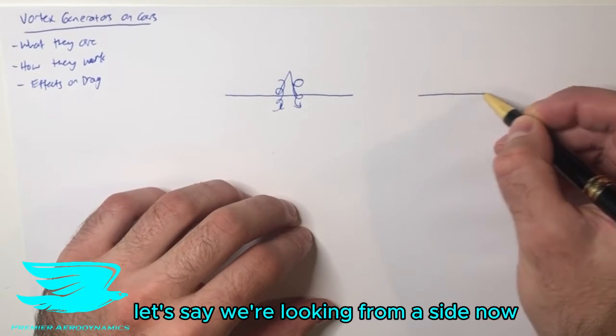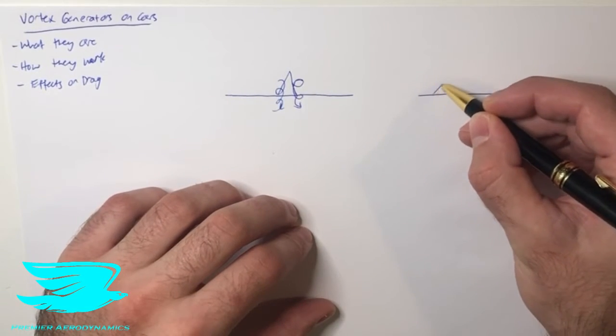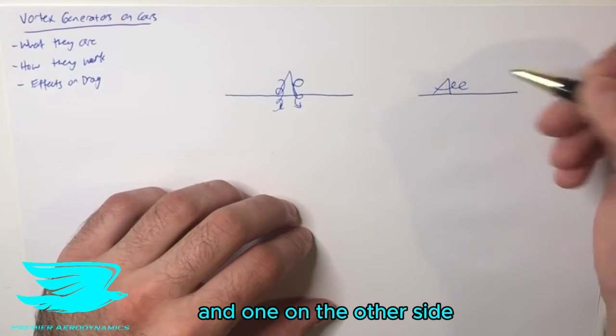So in what situations would we do this? Let's say we're looking from the side now, and we have this vortex generator. We have vortices coming off it, and one on the other side.